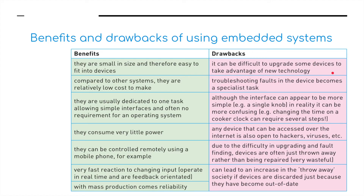Drawbacks: it can be difficult to upgrade some devices to take advantage of new technologies, meaning you would have to buy a new device. Troubleshooting faults becomes a specialist task. Although the interface can appear more simple — for example, a simple knob — in reality it can be more confusing; for example, changing the time on the cooker clock can require several steps. Any device that can be accessed over the internet is also open to hackers or viruses — for instance, hackers could hack into your burglar alarm system and turn it off if you're controlling it via your mobile phone. Due to the difficulty in upgrading and fault finding, devices are often thrown away rather than being repaired, which is very wasteful and can lead to an increase in the throwaway society.